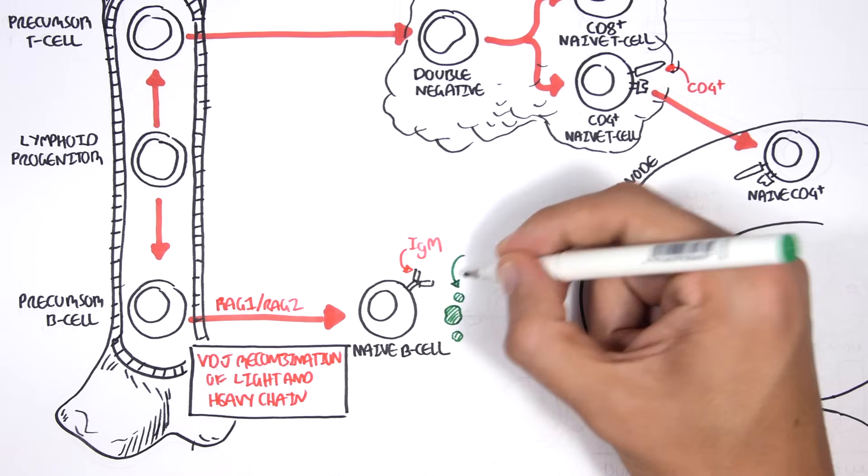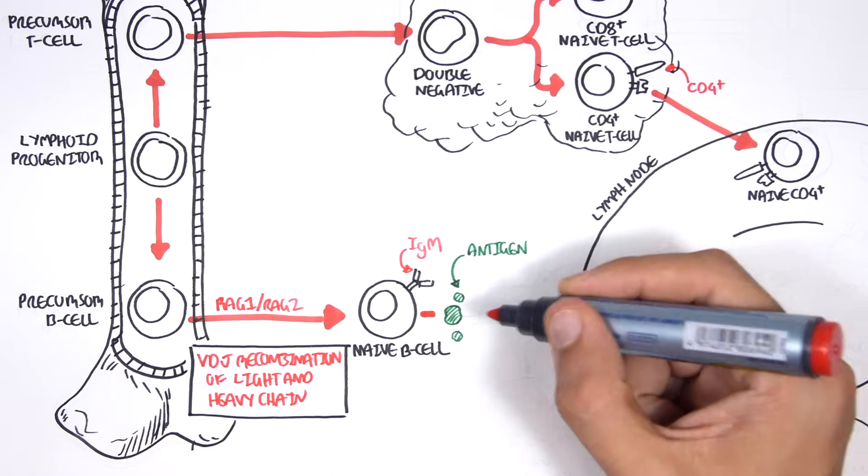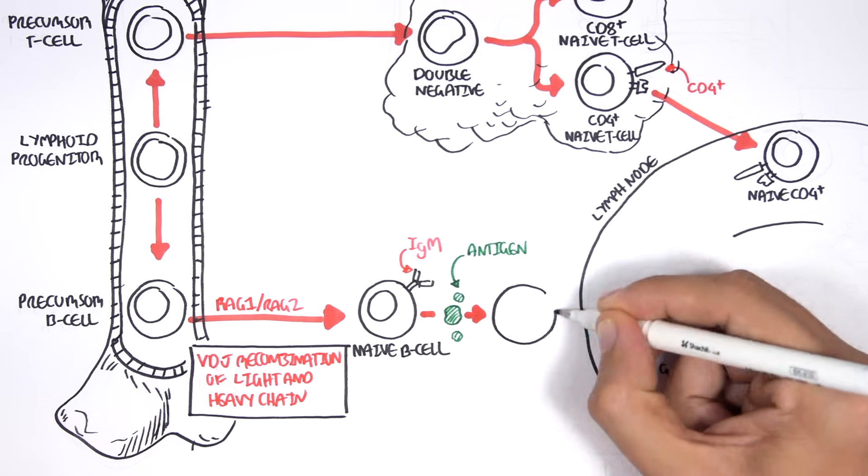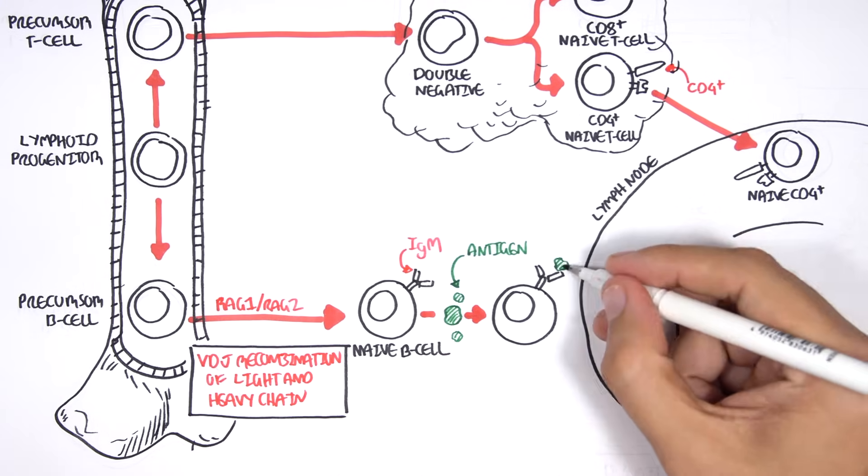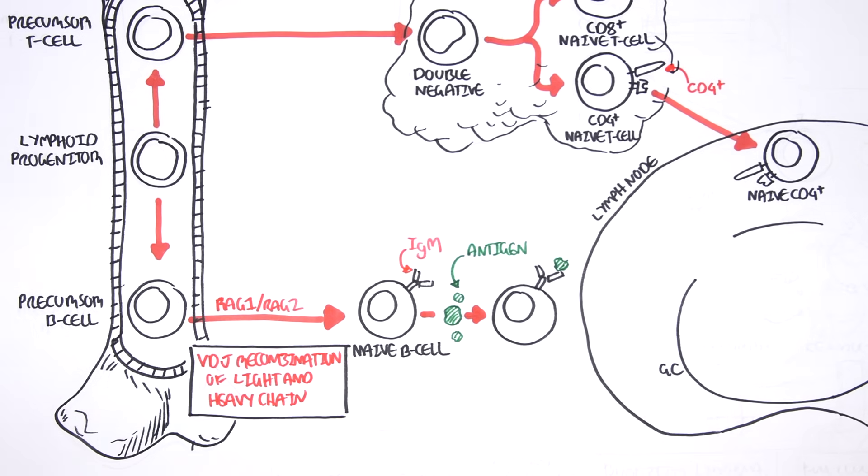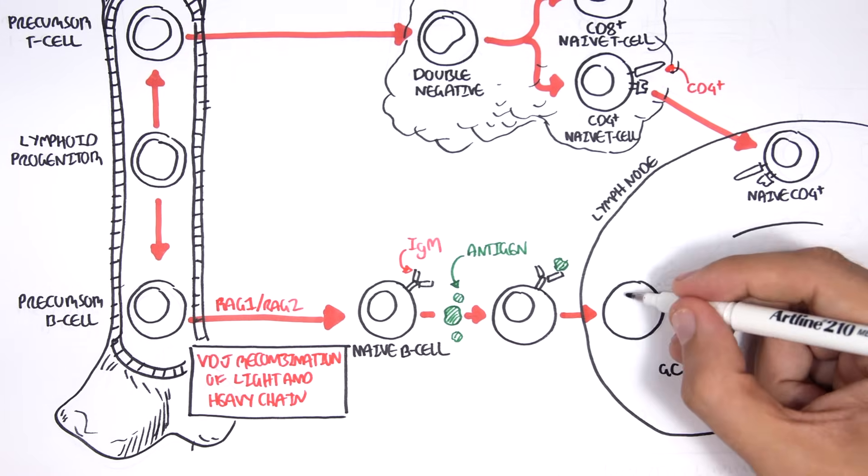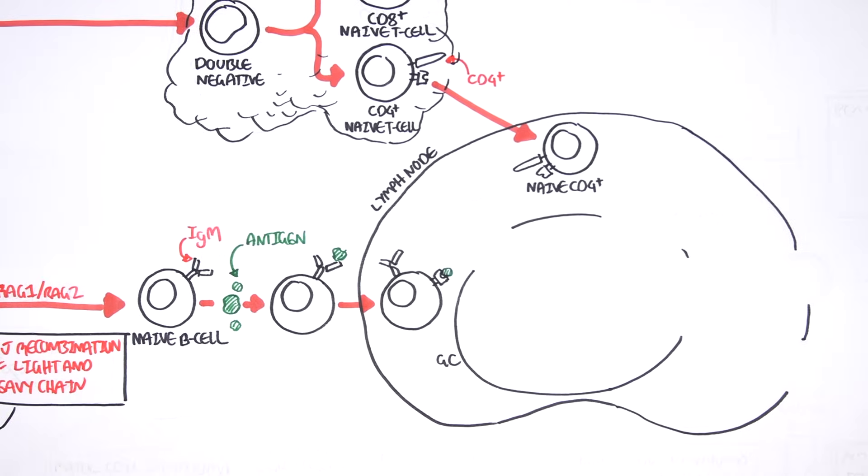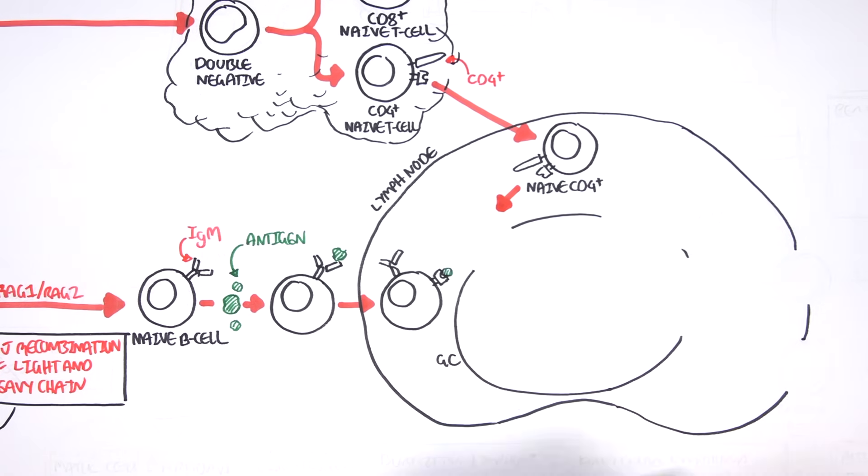During circulation or within the lymph node, if the naive B cell's surface-bound IgM recognizes an antigen, it will phagocytize it and then present the antigen on an MHC class II molecule on its cell surface. The experienced naive B cell now waits for either co-stimulation or stimulation by an activated CD4 T cell.